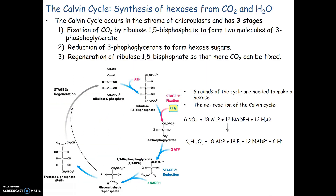Here is a basic diagram of the Calvin cycle, and as you can see, it looks a lot like the Krebs cycle or citric acid cycle. The Calvin cycle occurs in the stroma of the chloroplast and has three stages. The first stage is fixation — we fix CO2 onto ribulose 1,5-bisphosphate, forming a super unstable intermediate, which causes our six-carbon sugar to break into two three-carbon sugars.